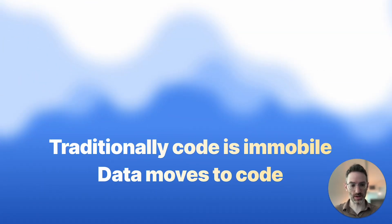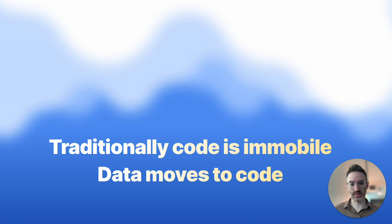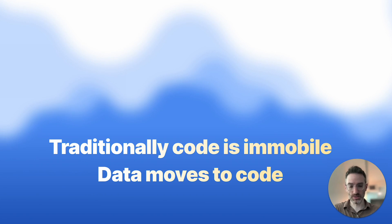One way to think about the inefficiency here is that it's really caused by the fact that code is immobile. The code of a service is running in some container, and if you want to interact with that code, you need to bring the data to the code.